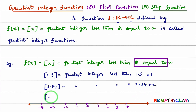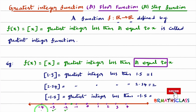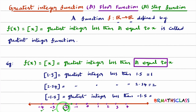Now see step minus 1.5. Many students will be confused at this point. What is step minus 1.5? It means the greatest integer less than minus 1.5. Observe where minus 1.5 is on the number line — this is minus 1.5. Now mark all integers less than minus 1.5: minus 2, minus 3, and so on. In these integers, which one is greatest? Minus 2 is the greatest integer less than minus 1.5. So the answer is minus 2.